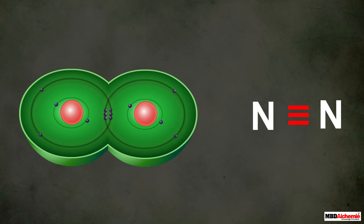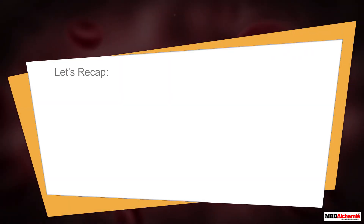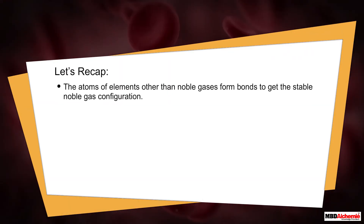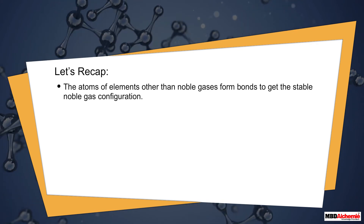Such a covalent bond formed by the sharing of three pairs of electrons between two atoms is called a triple covalent bond. A triple covalent bond is represented by a triple dash between the symbols of two atoms.